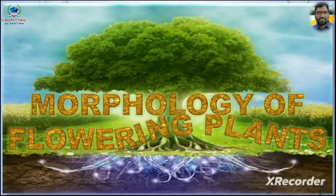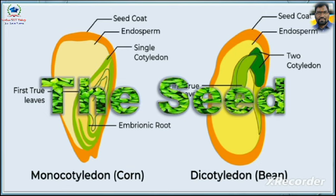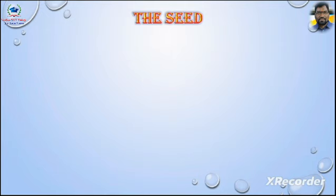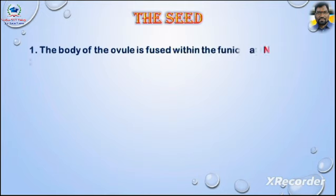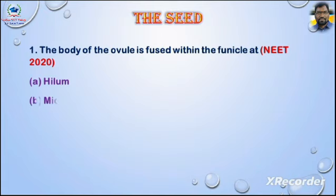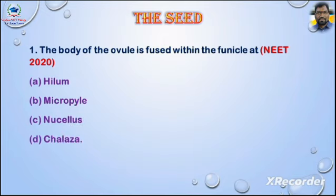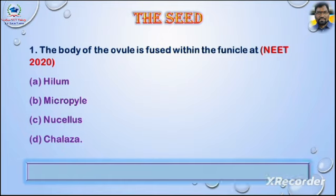Morphology of flowering plants — the seed. Question number one: the body of the ovule is fused within the funicle at — asked in NEET 2020. Options: A) hilum, B) micropyle, C) nucellus, D) chalaza. Answer is option A, hilum.